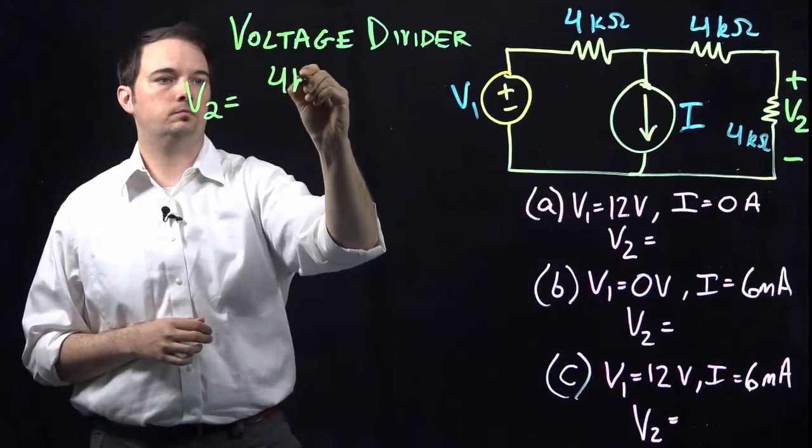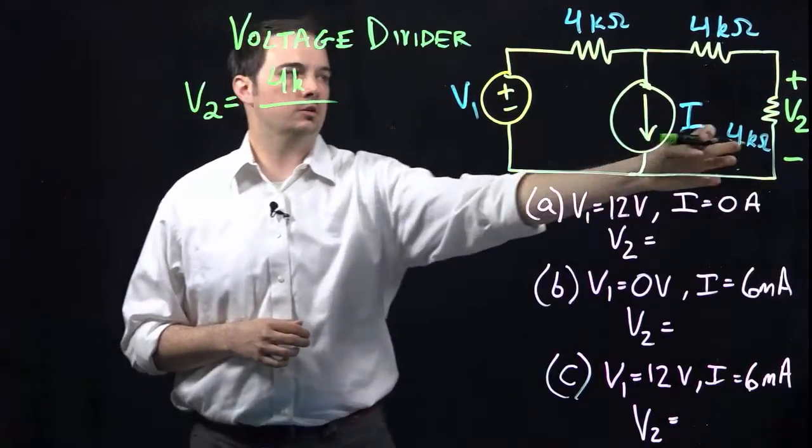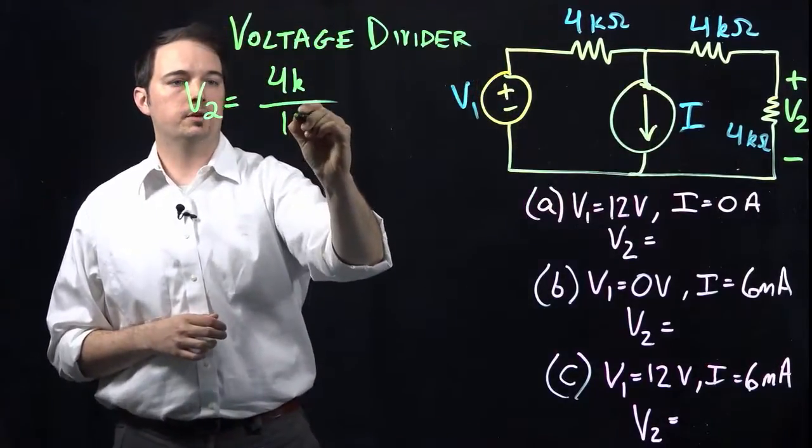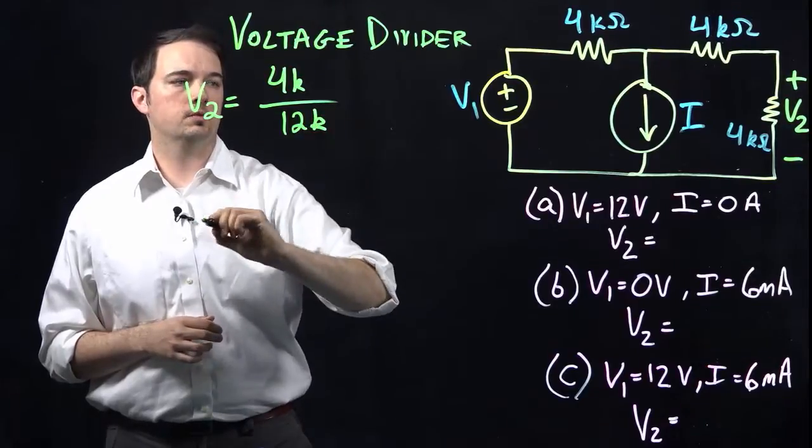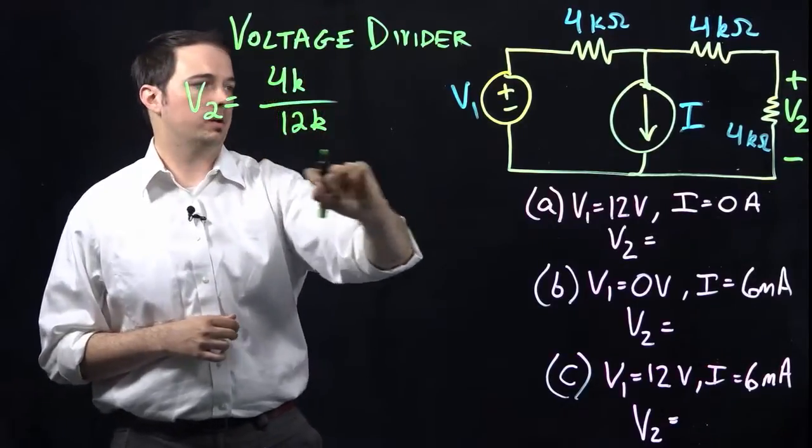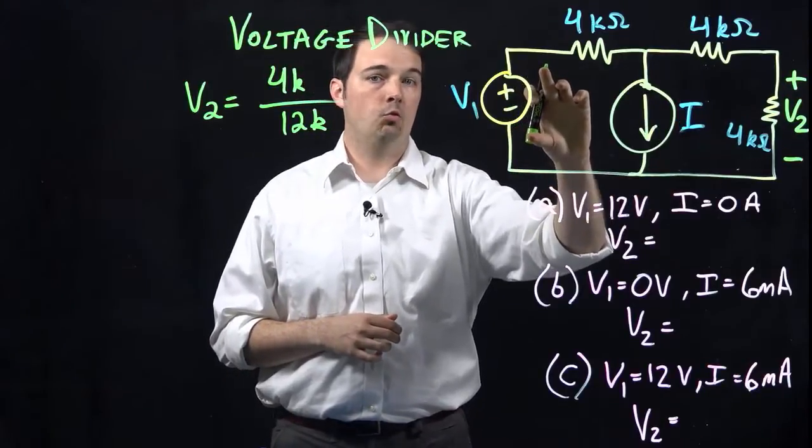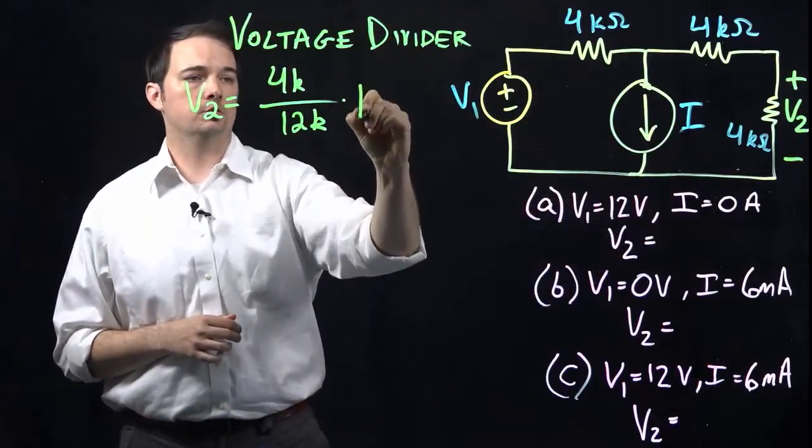So my voltage V2 is going to be equal to the value of that resistor, 4 kiloohms, over the series combination, or just the sum, of all three resistors here, which would give me a sum of 12 kiloohms. And that ratio, I multiply times whatever the value of this total voltage V1 happens to be, which is indicated as 12 volts.